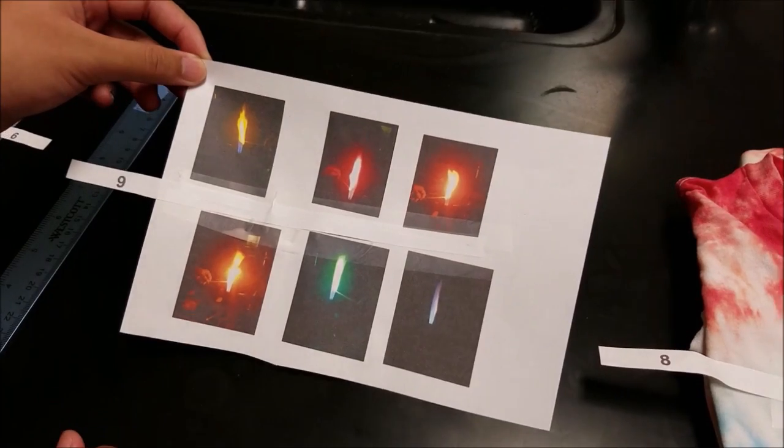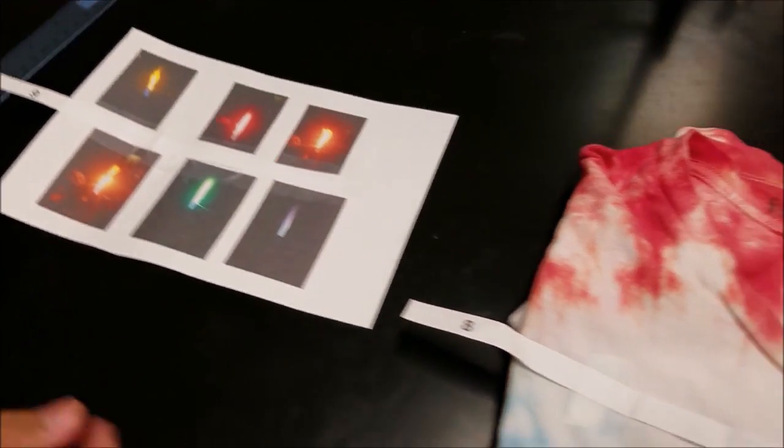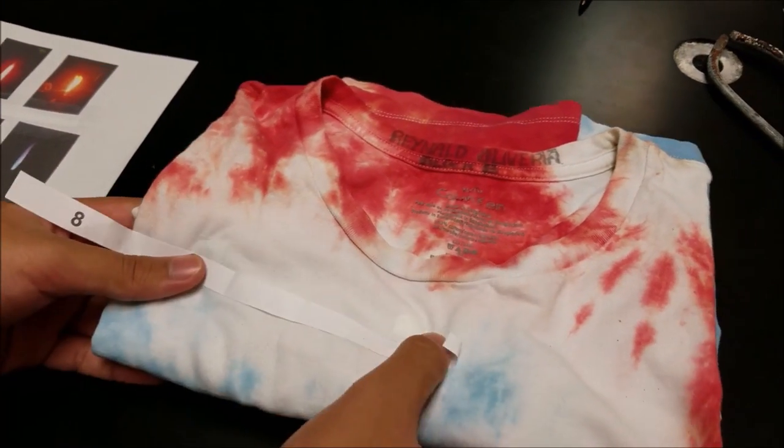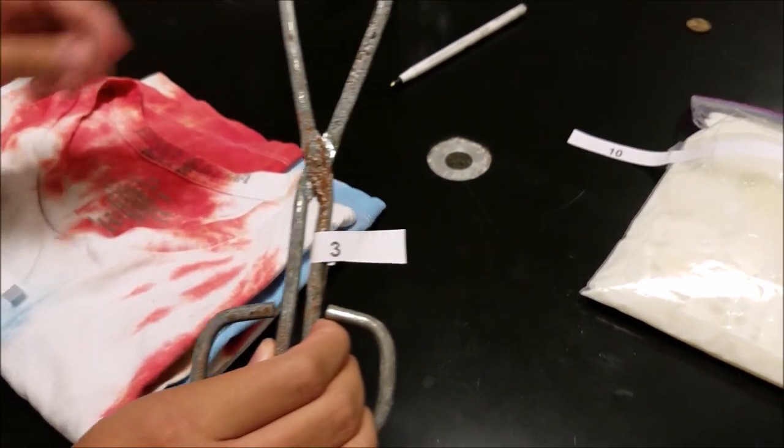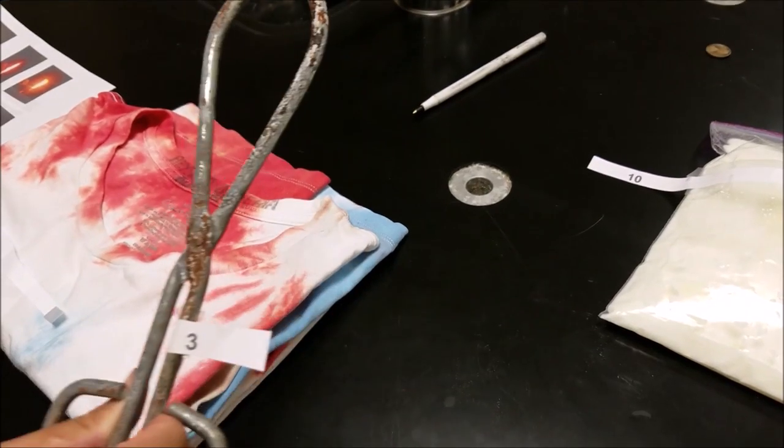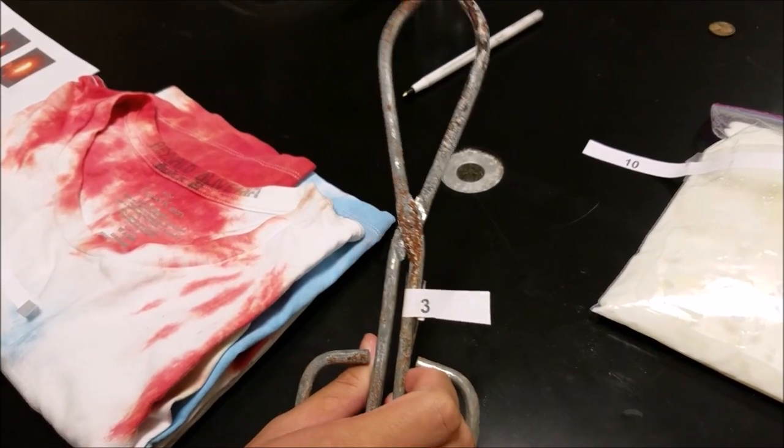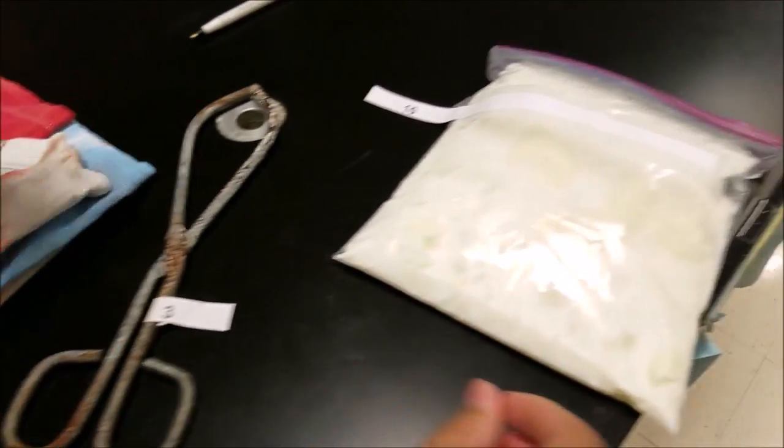Lab 9 was the flame test lab, these were pictures from the flame test. Lab 8 was the tie dye lab. Lab 3, and it was the tongs we used with the crucible from the flame, making it with the oxide.